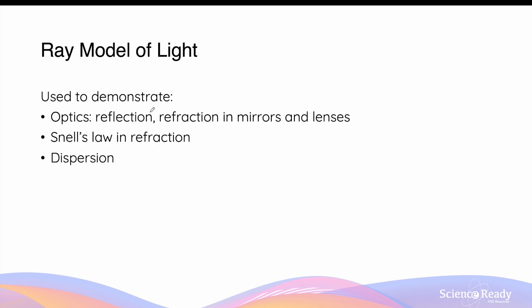The ray model of light is useful to demonstrate optics, that is the behaviour of light as single rays and how they undergo reflection and refraction in mirrors and lenses respectively. The ray model of light is also useful to demonstrate the effect of Snell's law during refraction, as well as the phenomena of dispersion when light passes through a glass prism.